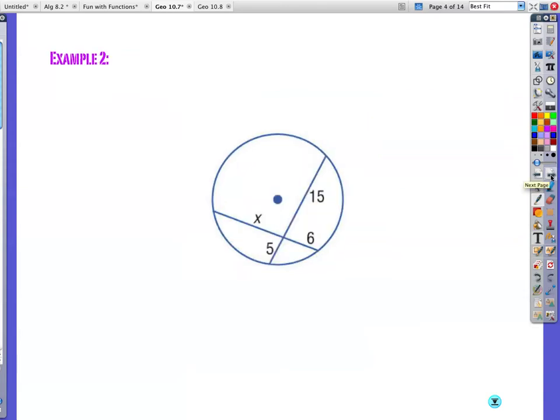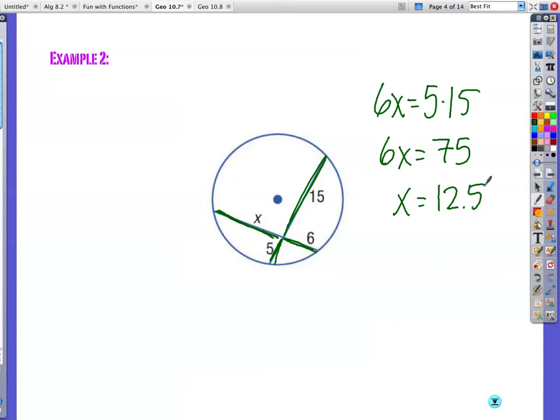Example two, let's try it again. 6 times x is equal to 5 times 15. Boy, that seems really easy, doesn't it? So 5 times 15, I believe, is 75. Divide by 6, that's 12.5. That's all it is.